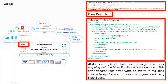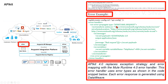As an error example: in APIkit 4.0, the exception strategy and error mapping are replaced with the Mule runtime 4.0 error handler. This error handler uses error types as shown in this snippet. Each error response is generated using DataWeave. For example, the APIkit BAD_REQUEST error type has a status code of 400 and the message 'Bad Request'.